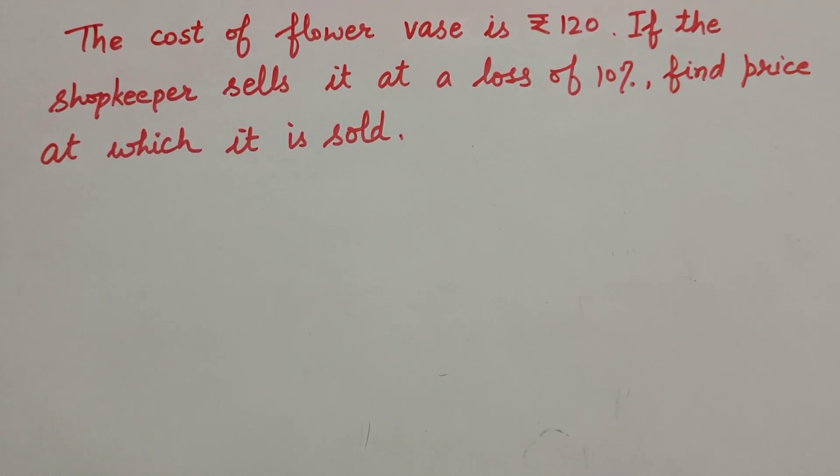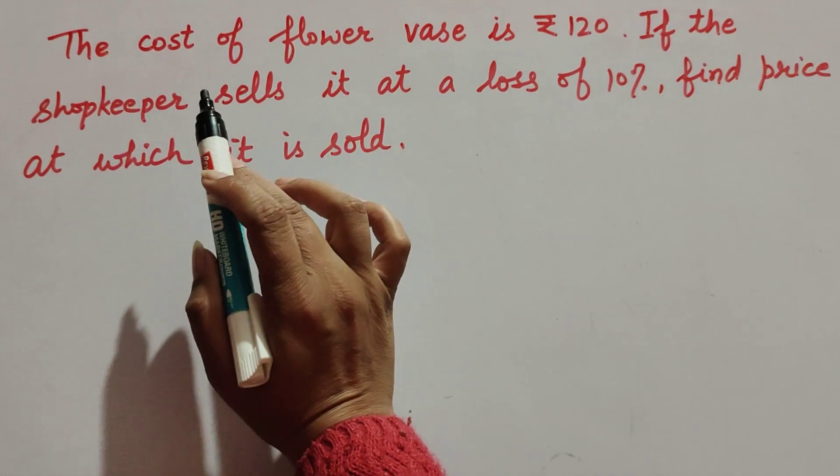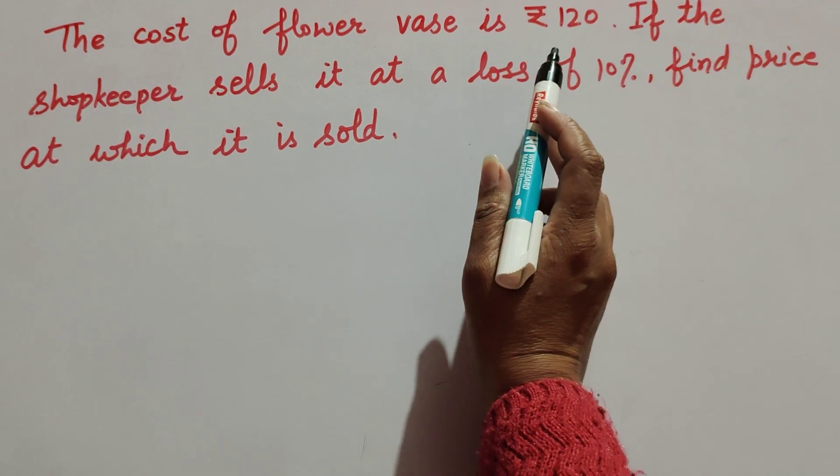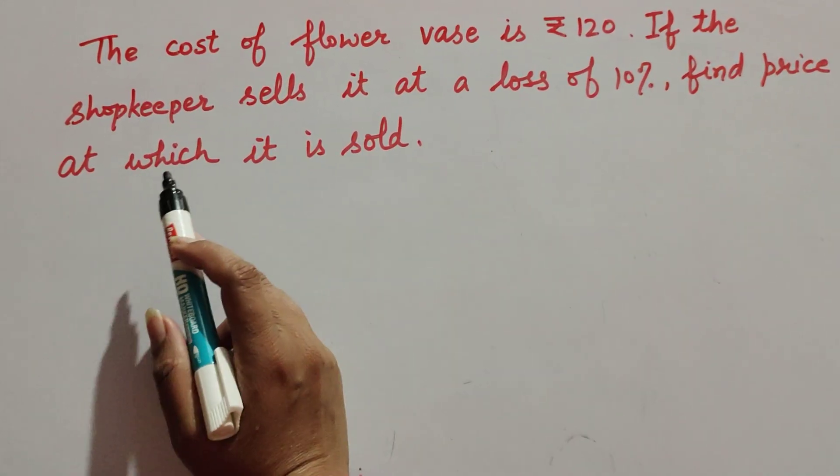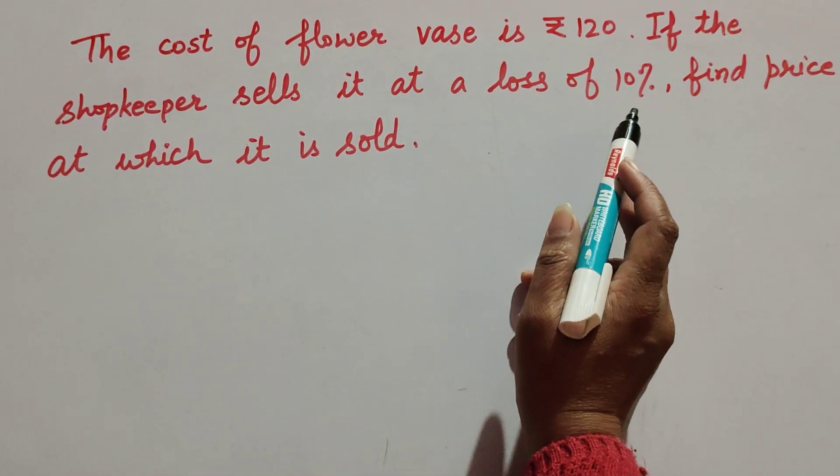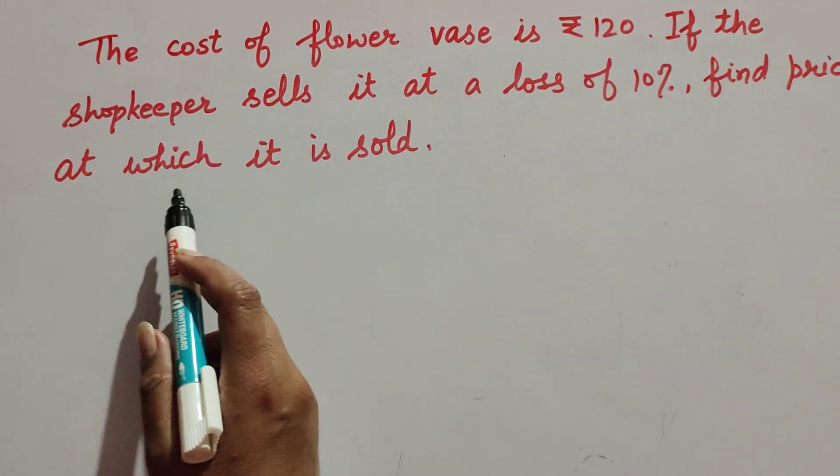Hello friends, welcome to my channel. In this video we discuss: the cost of a flower vase is rupees 120. If the shopkeeper sells it at a loss of 10 percent, find the price at which it is sold.